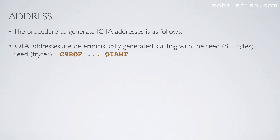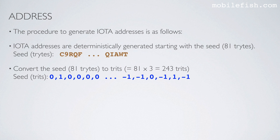IOTA addresses are deterministically generated starting with the seed. The seed is 81 trites long. Here is an example of such a seed — I only show the first 5 trites and last 5 trites of the seed. Convert the seed, which is 81 trites long, to trites. After conversion it has 243 trites. I only show the first 6 and the last 6 trites of the seed.